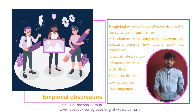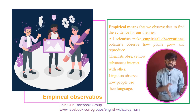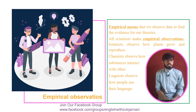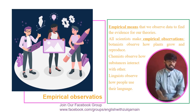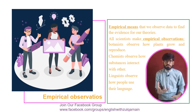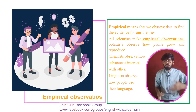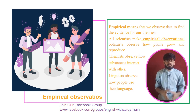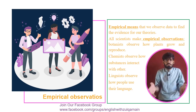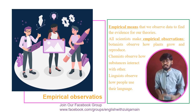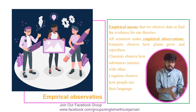The scientific way of thinking about language involves making systematic empirical observations. Empirical means that we observe the data to find evidence for our theories. All scientists make empirical observations — for example, botanists observe how plants grow and reproduce, chemists observe how substances interact with each other, and linguists observe how language is used.